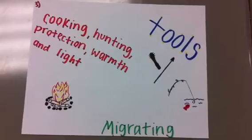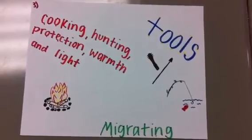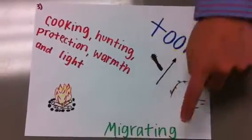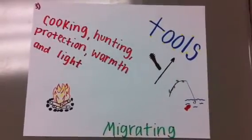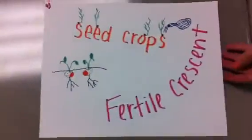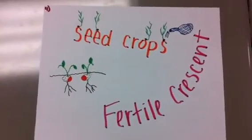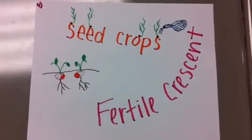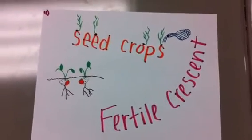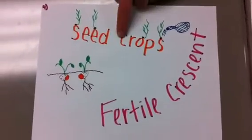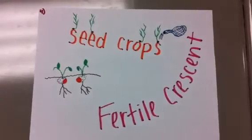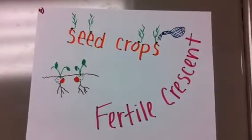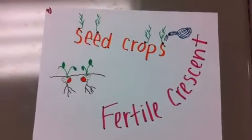Nevertheless, humans still migrated with the seasonal cyclical movements of animals. The first agriculture revolution also encompassed the advent of the domestication of seed crops, which are plants that are reproduced by cultivating seeds.